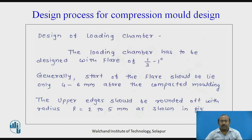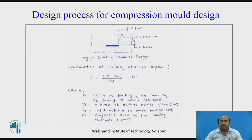Design of loading chamber has to be designed with a flare of 1/3 to 1 degree. Generally, the start of the flare should lie only 4 to 6 mm above the compacted molding. The upper edge should be rounded off with a radius of 2 to 5 mm as shown in this particular figure.